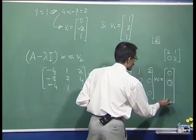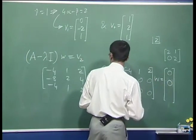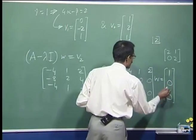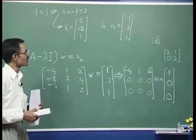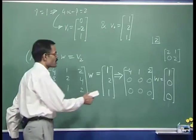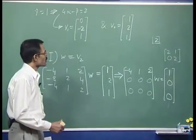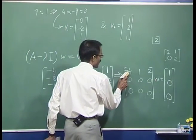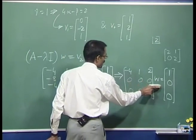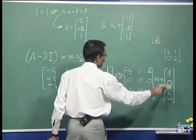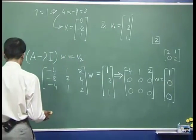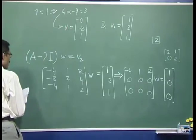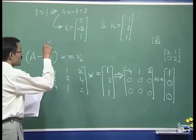Now this is consistent. Since it is consistent, w can be determined: minus 4 times the first element of w plus 1 times the second element of w plus 2 times the third element of w equals 1. This is a valid generalized eigenvector equation to be used with the second eigenvector.